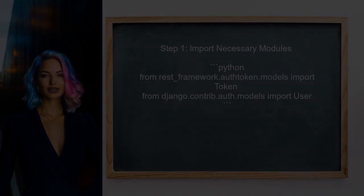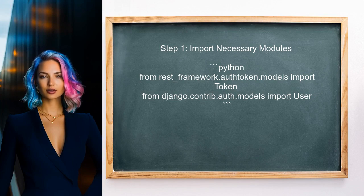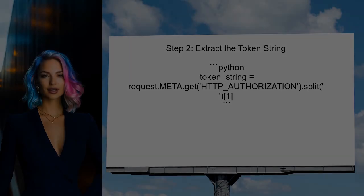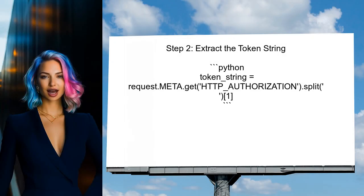To retrieve the user object from a token string in Django REST Framework, you should first import the necessary modules. This includes the token model from the authentication module. Next, you need to extract the token string from the request, which can typically be done by accessing the request headers.